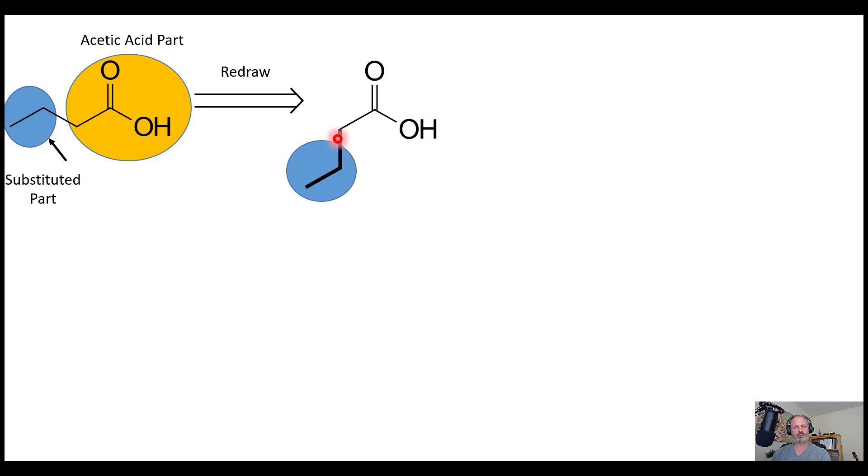Once we do that, our point of attachment here for our substituted part has to turn into a carboxylic acid. So I'm going to add another carboxylic acid to this position. And in essence, once I've done that, this top part of the molecule really has become malonic acid.